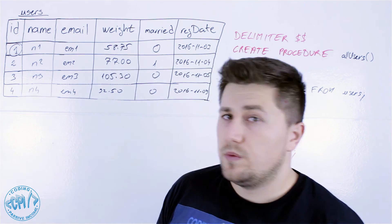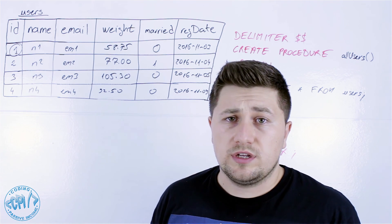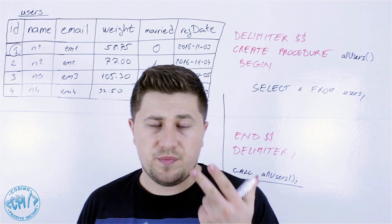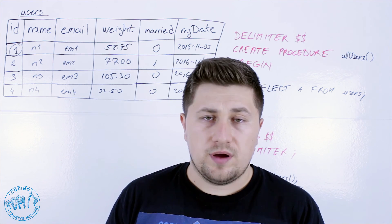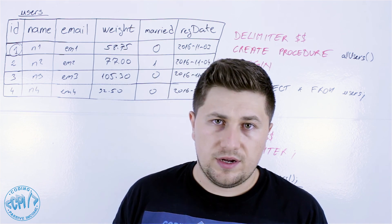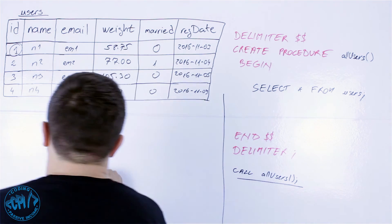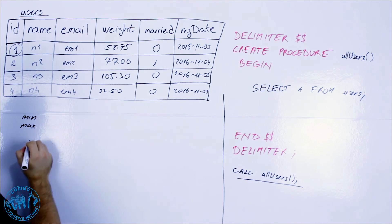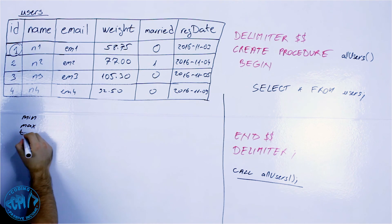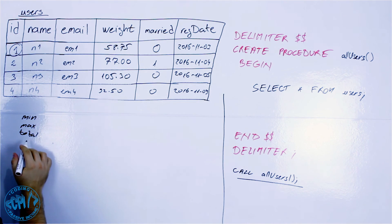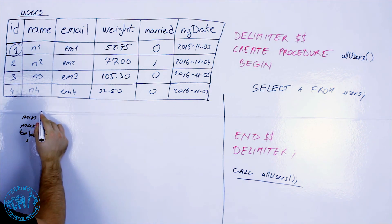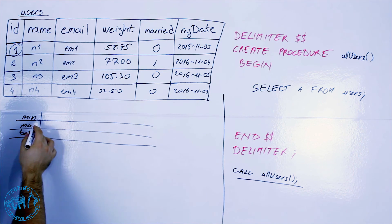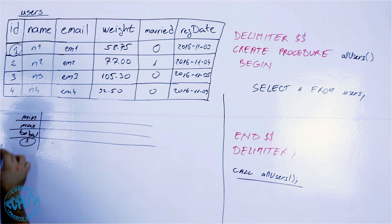Now let's say we want to do something that will need to calculate something inside the database. We will create a procedure that will have three parameters. The first parameter will be x — the number we want to multiply by. Then we have min and max, which define the range of numbers. And we have total, which accumulates the result. So for every number from min up to max, we multiply it by x and add it to total.